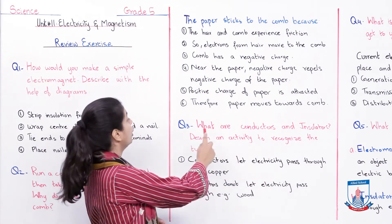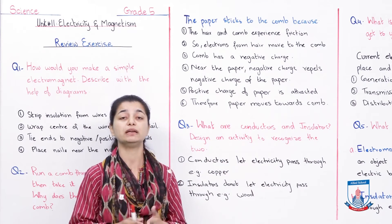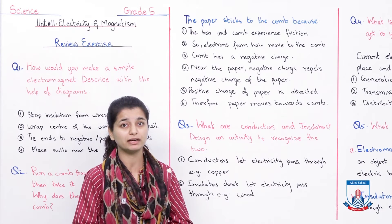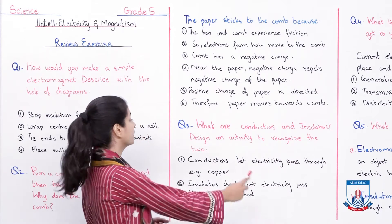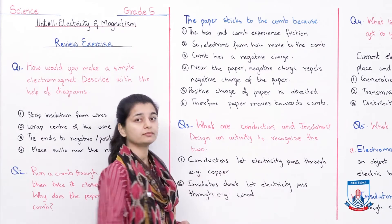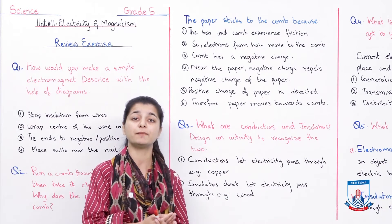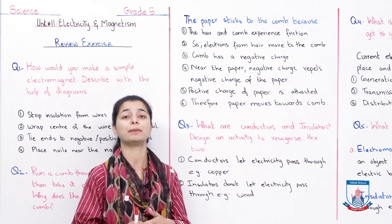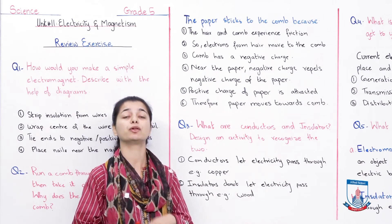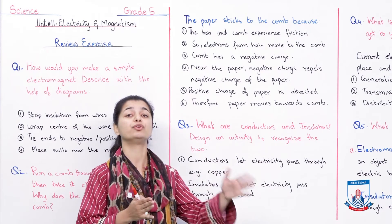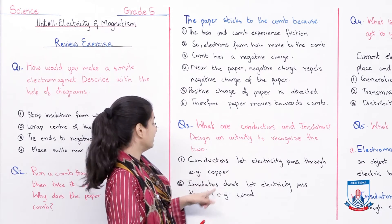Now let's go to question number 3: What are conductors and insulators? Design an activity to recognize the two. This is very simple and we have studied it many times. Conductors let electricity pass through — for example, copper. They allow electricity to move from one place to another. Insulators do not let electricity pass through — for example, wood. If you give them electricity, it cannot pass through and they cannot conduct it.